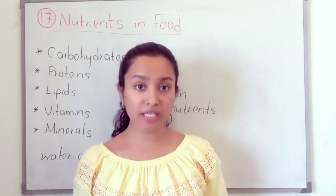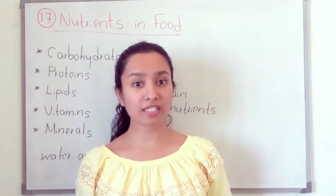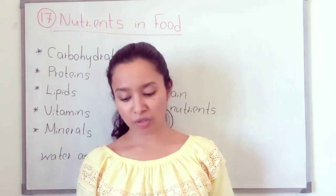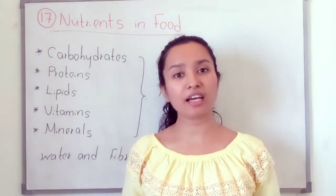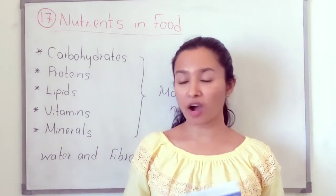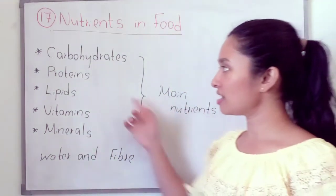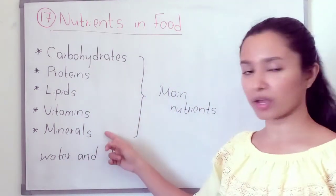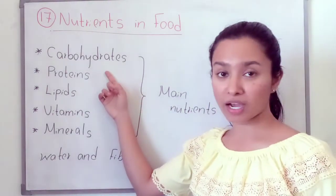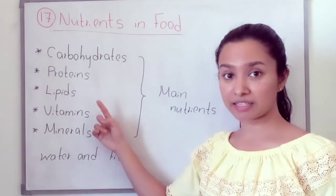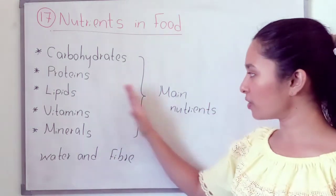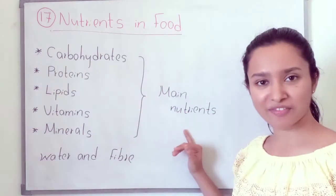In your day-to-day life you are taking different types of food items for breakfast, lunch and dinner. In this food there are different types of nutrients. There are mainly five main nutrients: carbohydrates, proteins, lipids, vitamins and minerals.